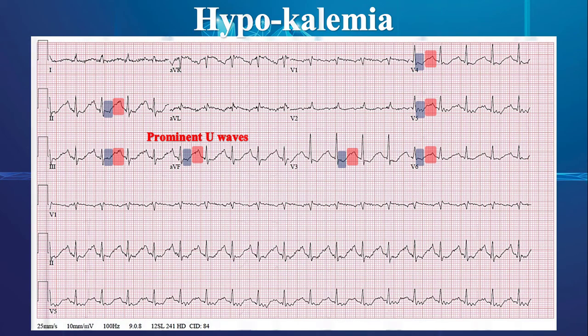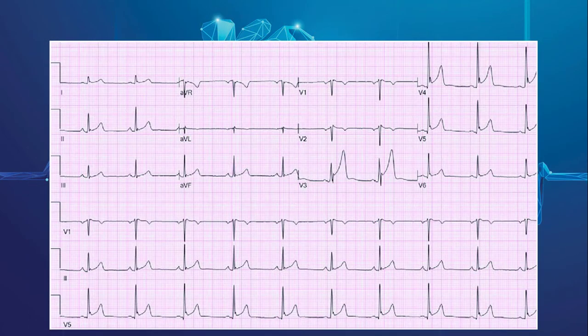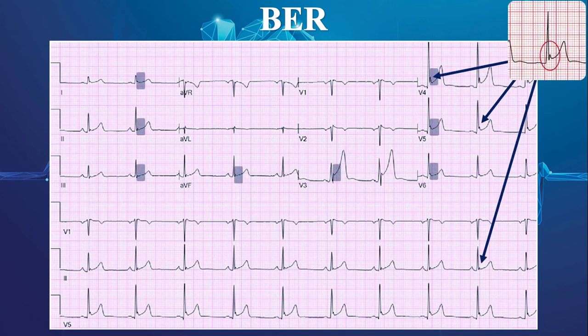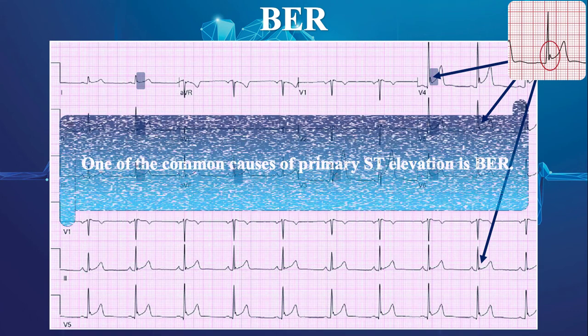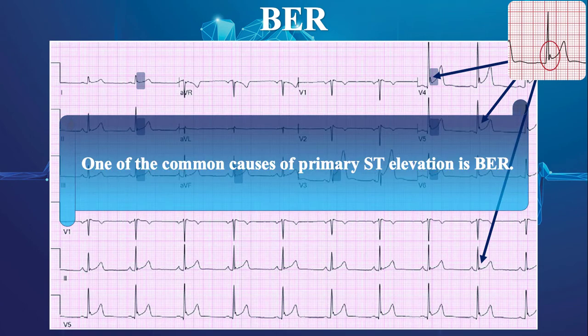The next EKG demonstrates benign early repolarization, or BER. Widespread ST elevations with concomitant fishhook sign and lack of reciprocal ST depression are highly in favor of early repolarization. As we said, one of the common causes of primary ST elevation is BER.